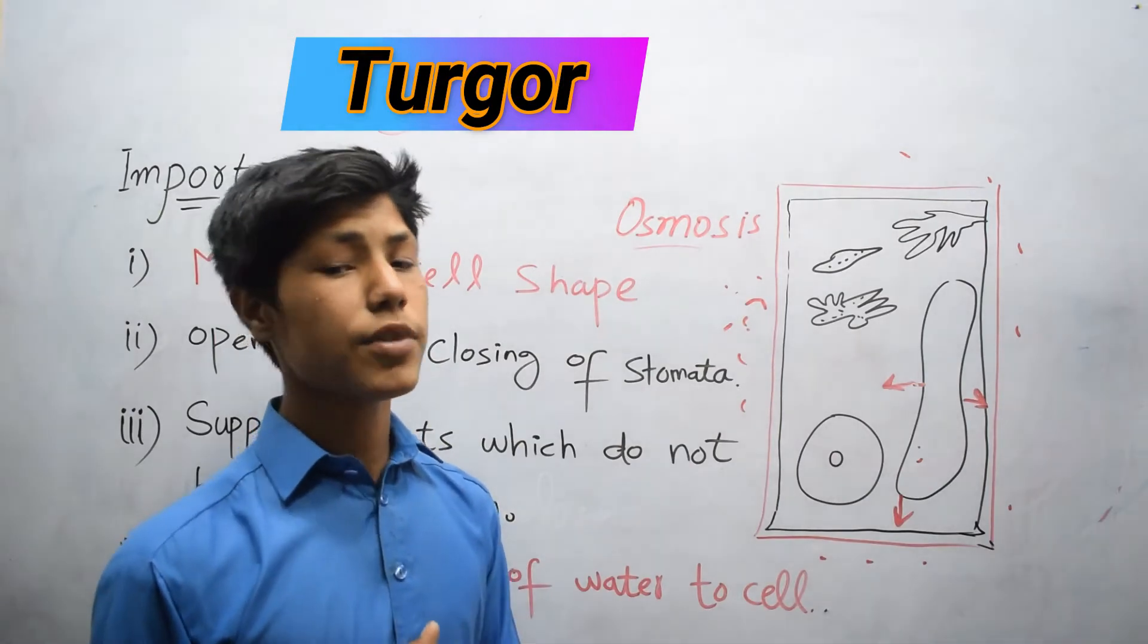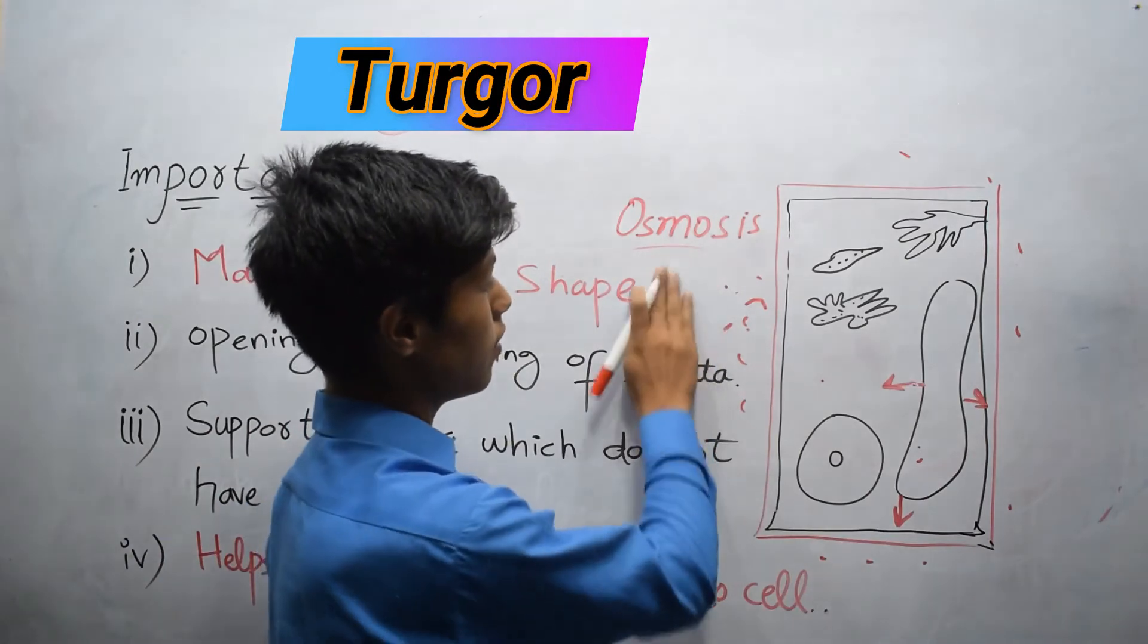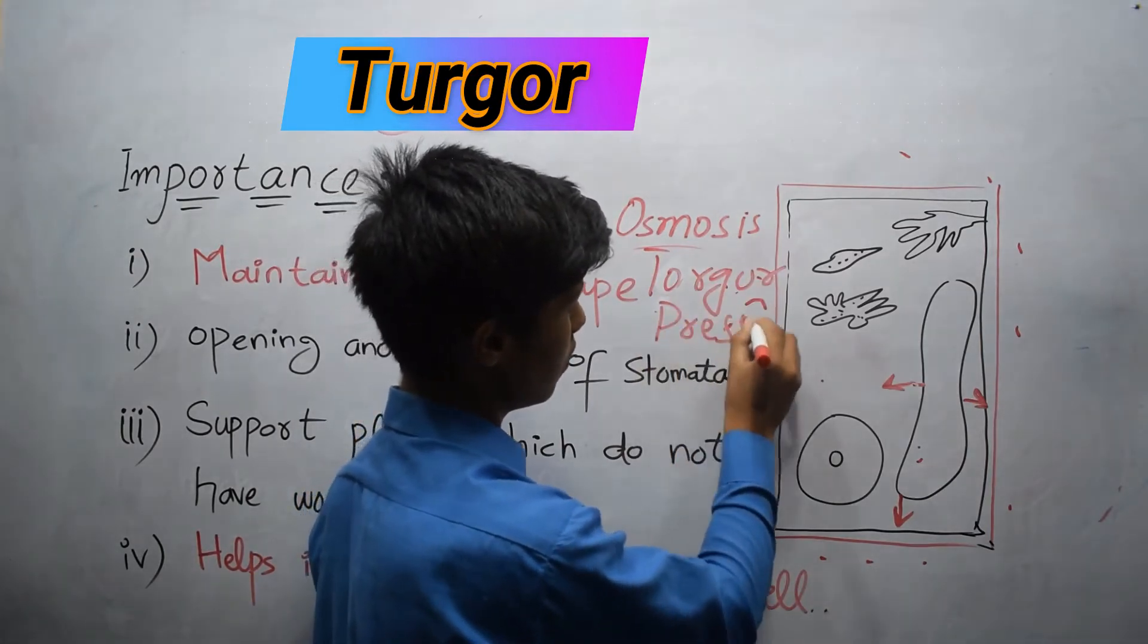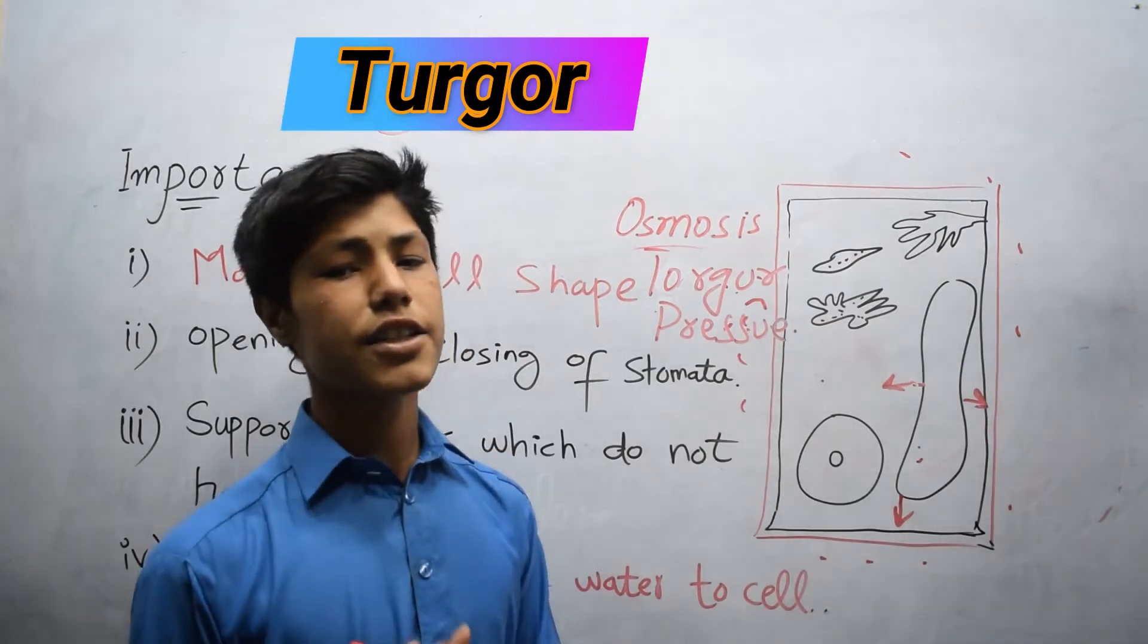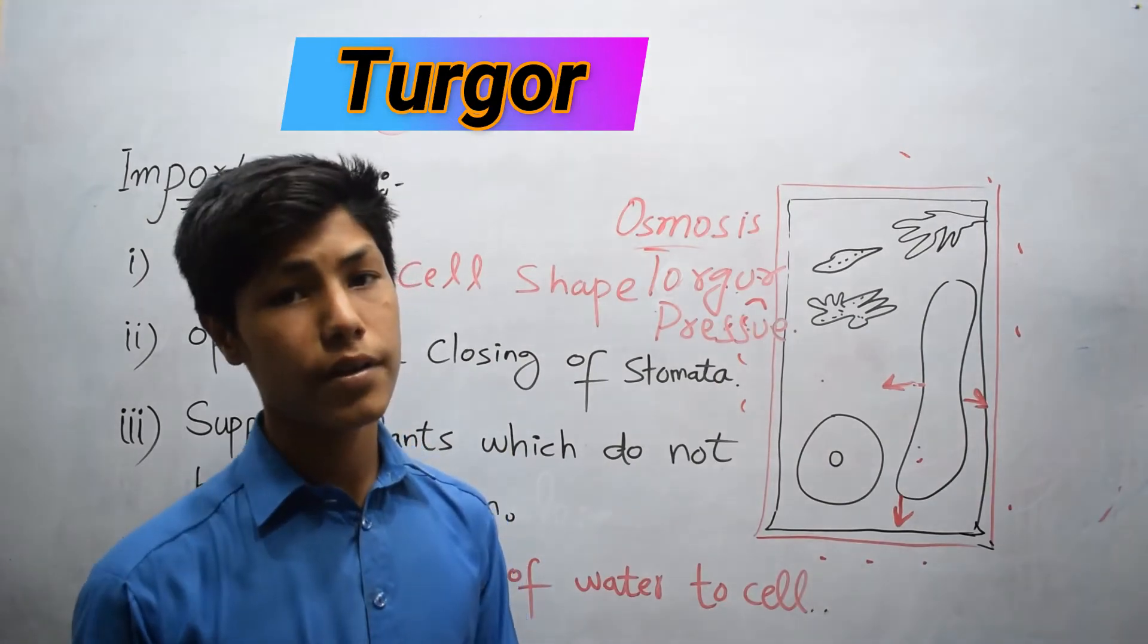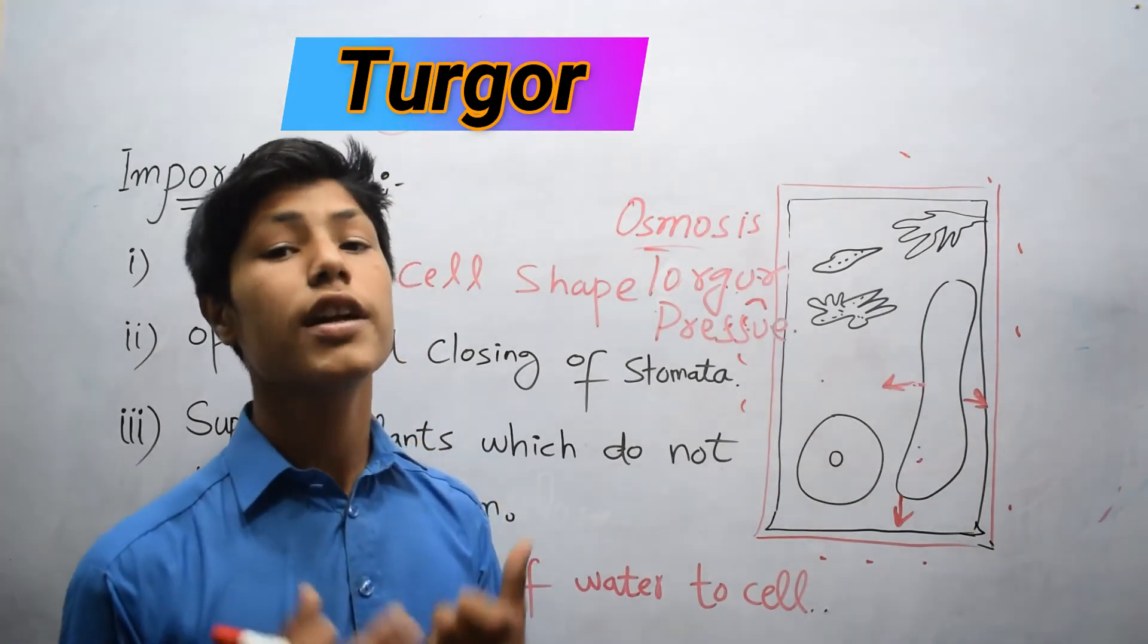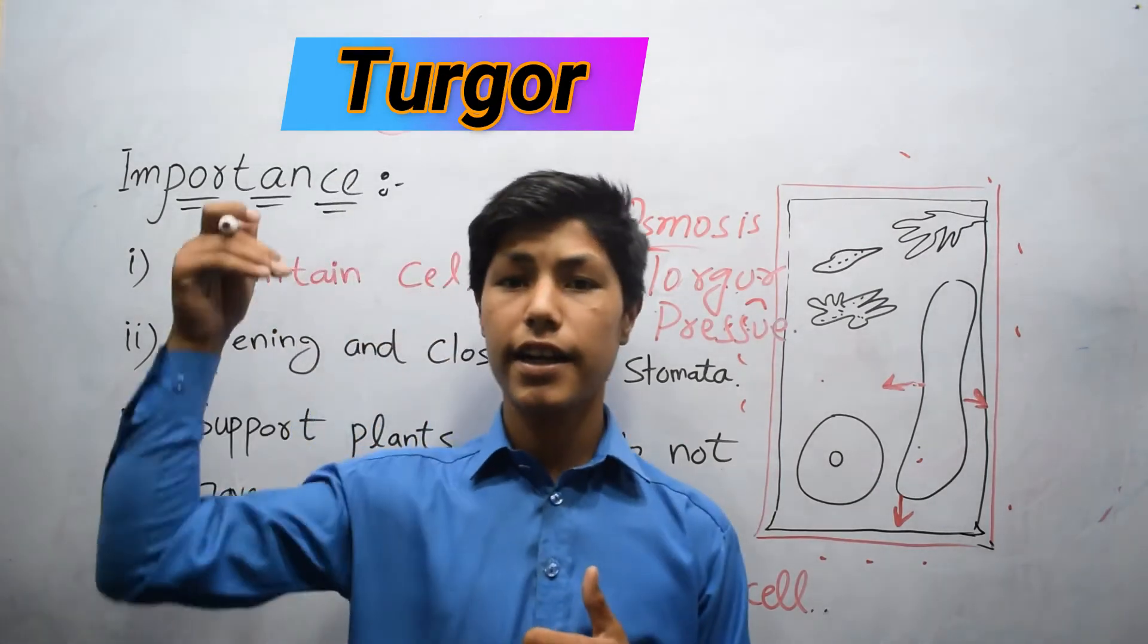The pressure, and this pressure of water is called turgor pressure. At this stage the cell becomes hard and stout due to presence of water in vacuole. So this condition is called turgor.